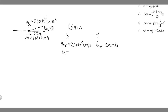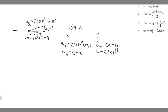Now for the acceleration: the particle is hit with a constant acceleration in the y direction, which means there's no acceleration in the x. So a sub x is 0 — the particle moves at constant velocity horizontally. Only in the y does the acceleration change. And a sub y is 5.3 times 10 to the 17 centimeters per second squared, which is given.